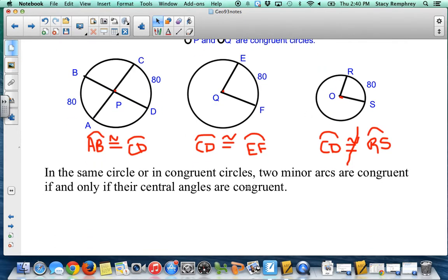In the same circle or in congruent circles, two minor arcs are congruent if and only if their central angles are congruent. Well, since the minor arc equals the central angle, that's going to, that should kind of make sense. But you'll see that being applied later on.